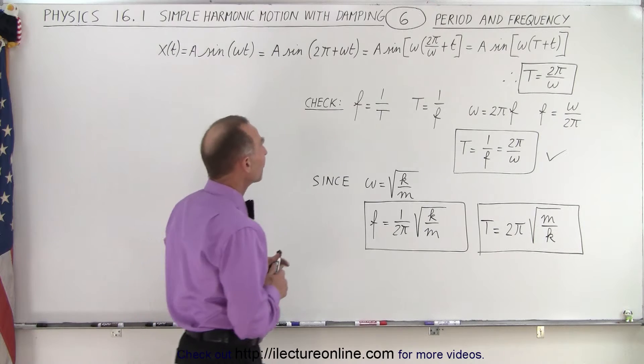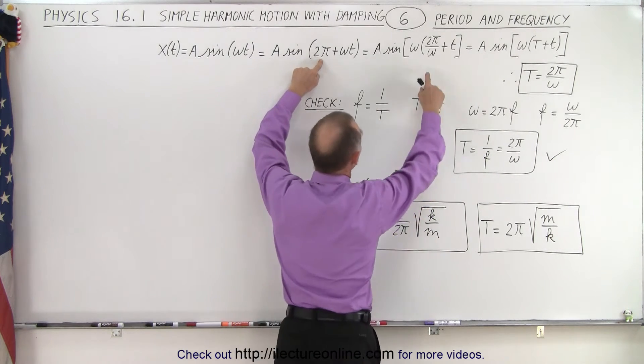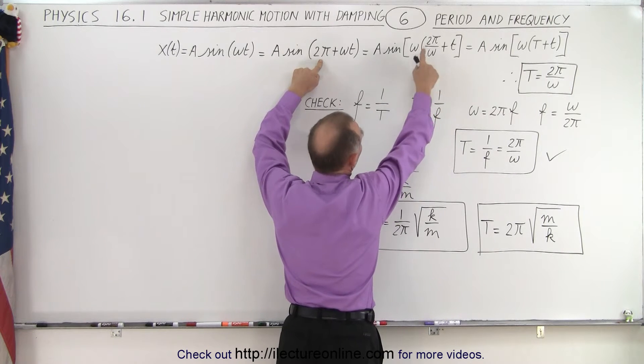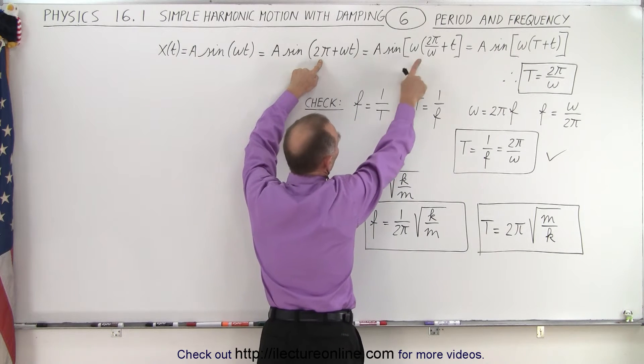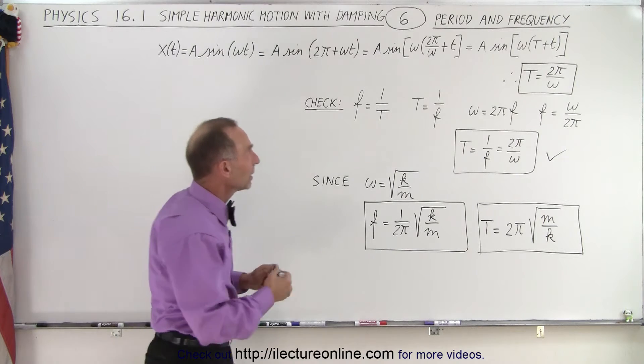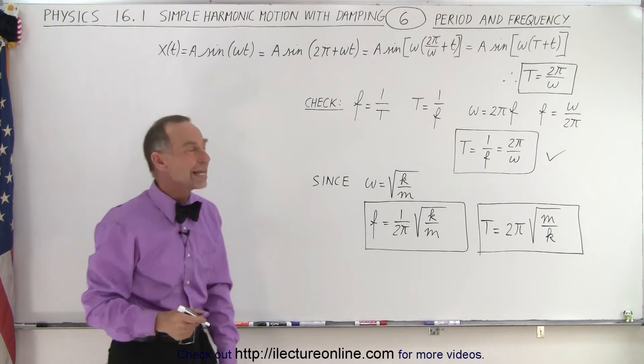And then if we factor out an omega, how do we factor out an omega out of 2 pi? Well, we can do that by taking an omega out and dividing by omega. When we multiply this out, we get 2 pi again, and we also factor out the omega of the second term, so that's how we write a sine of omega times the quantity 2 pi over omega plus t.